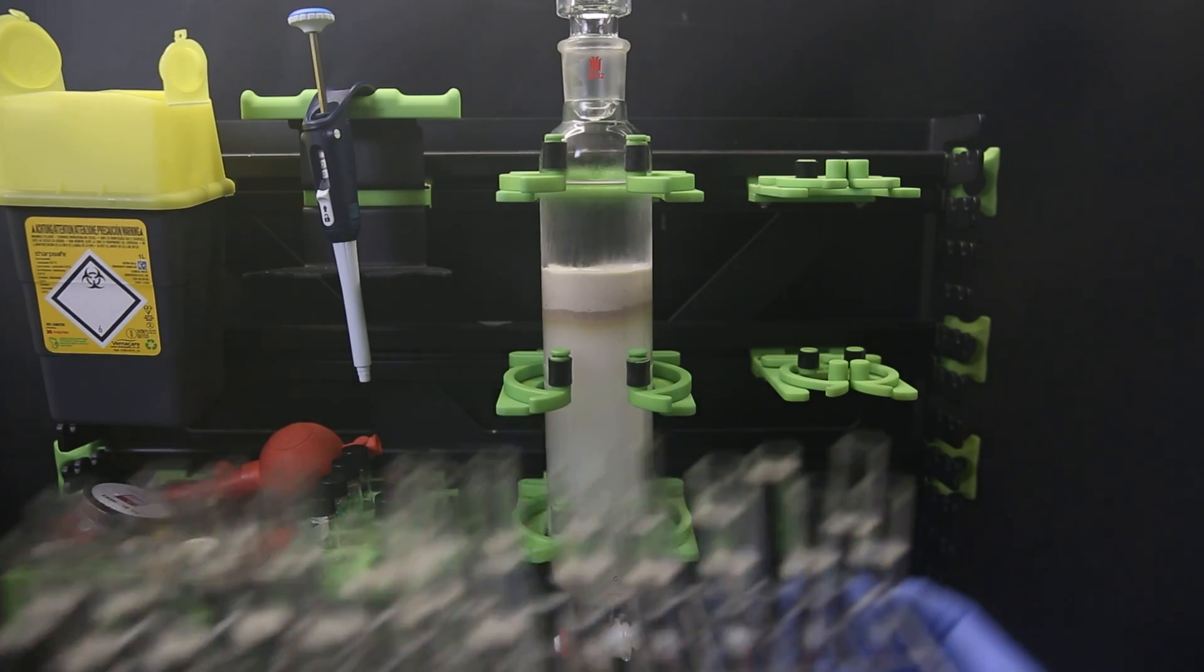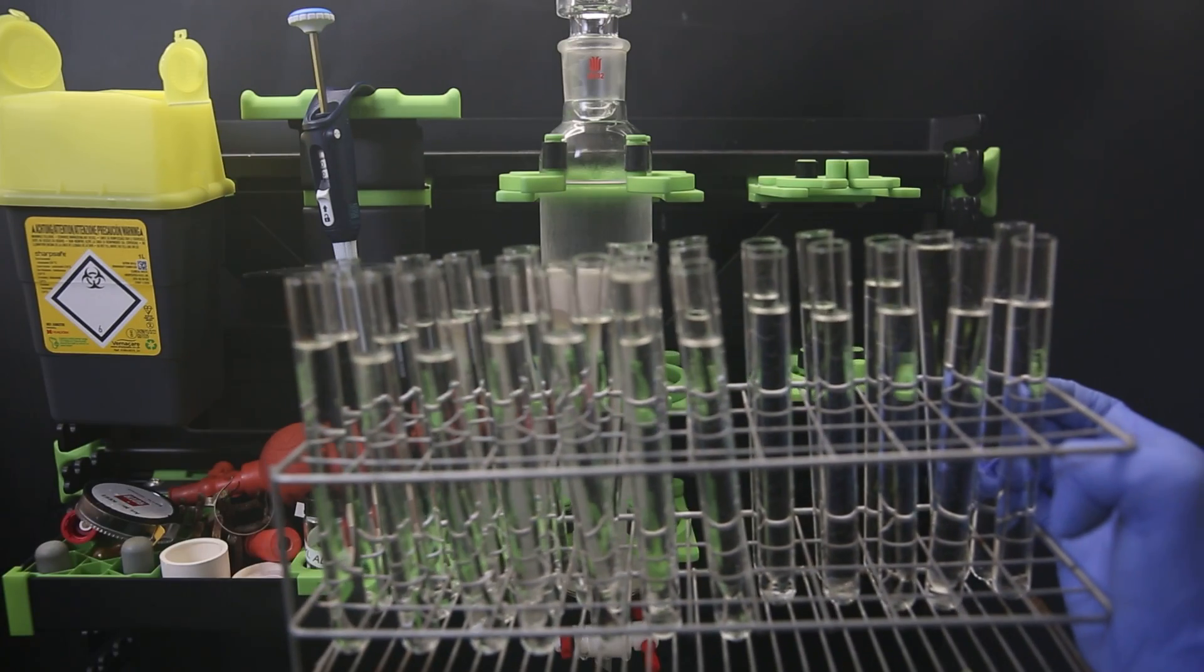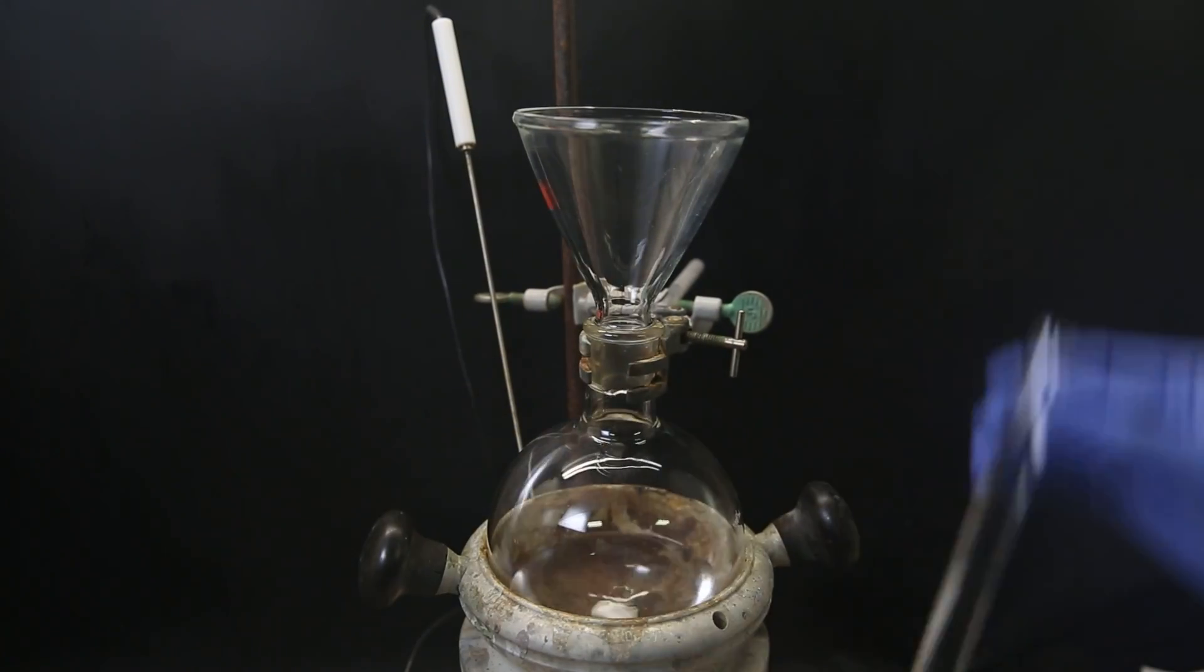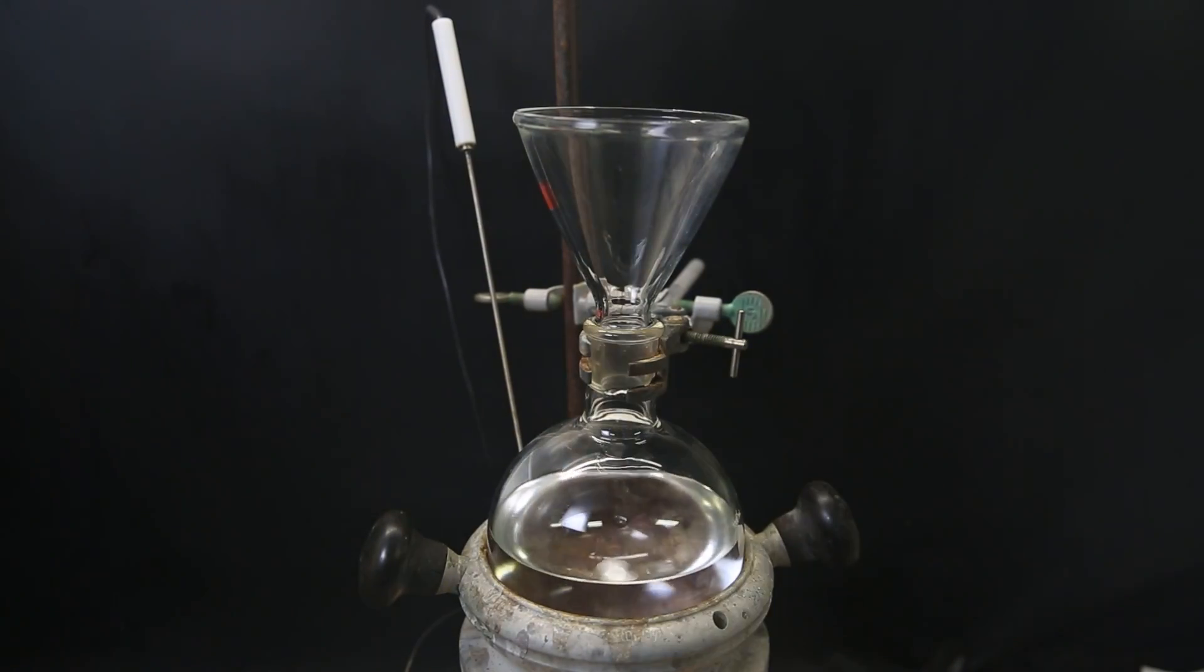In the end, I collected about 30 small fractions and one big fraction at the start. Analyzing it with TLC, we see that the big fraction 0 contains only impurity, and fraction 1 still contains some of it as well. I discard both of those and take fraction 2 and all that came after. I combine all of those in a large flask and distill off all of the solvent.